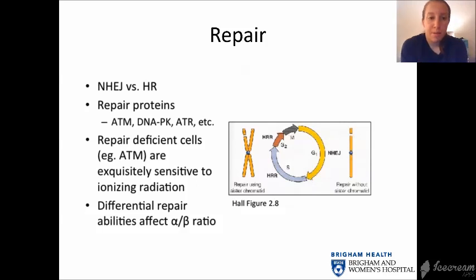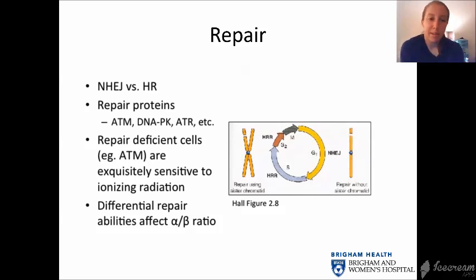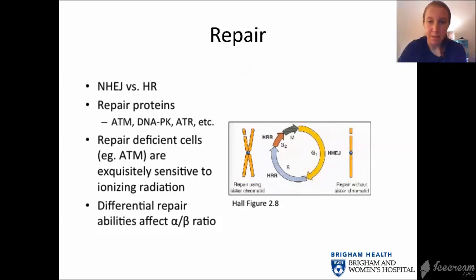There are several repair mechanisms for both tumor and normal tissue. Repair-deficient cells are exquisitely sensitive to ionizing radiation, and differential repair abilities affect the alpha/beta ratio. Regarding repopulation, cells repopulate between each fraction of radiation. Differential repopulation affects the survival curve — over time, if cells are left alone after irradiation, they will proliferate and the surviving fraction will increase.